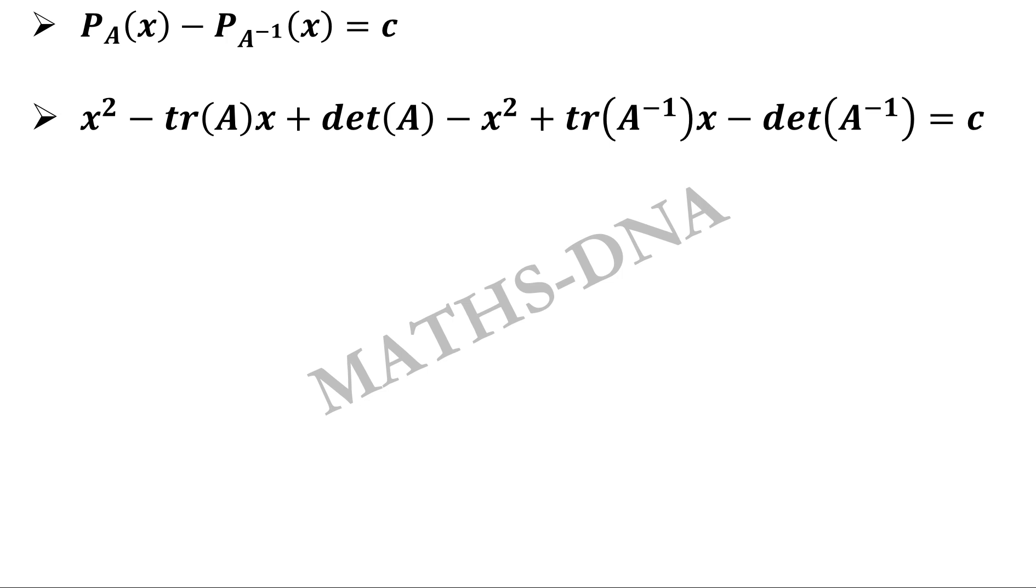x² gets eliminated and the terms with x and the constants are taken together. This gives us (tr(A^-1) - tr(A))x plus det(A) - det(A^-1) - c equals to 0.